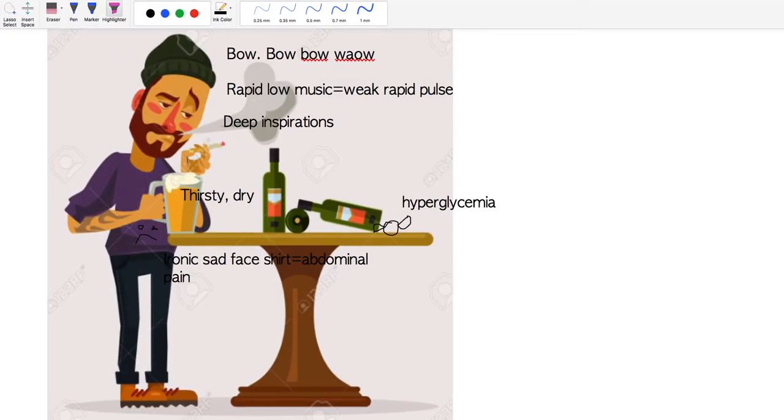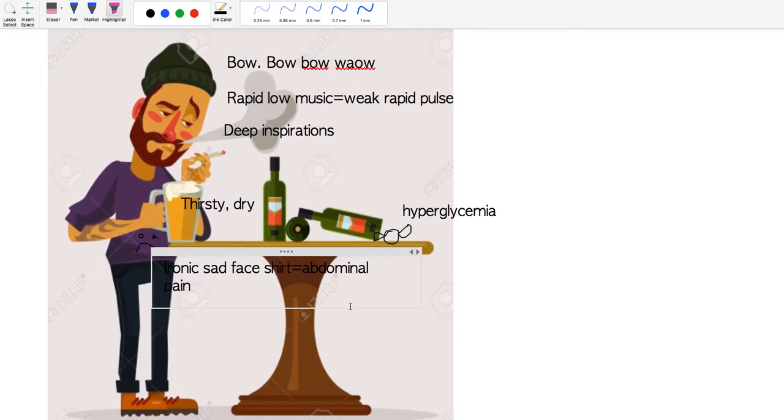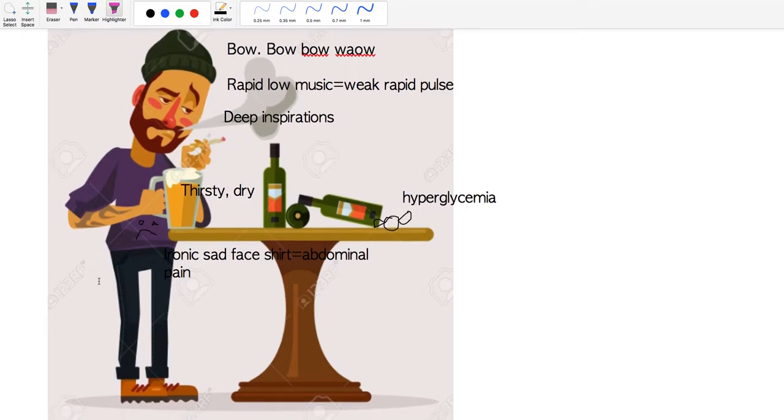Hey what's up YouTube. I was having a hard time finding good mnemonics to remember the difference between hyper and hypoglycemia in terms of clinical manifestation, so I made some mnemonics to share with everyone. I hope you guys find them helpful. First, we're going to use the two contexts of being at the bar and at the club.